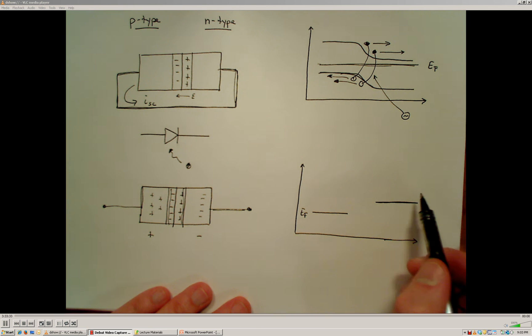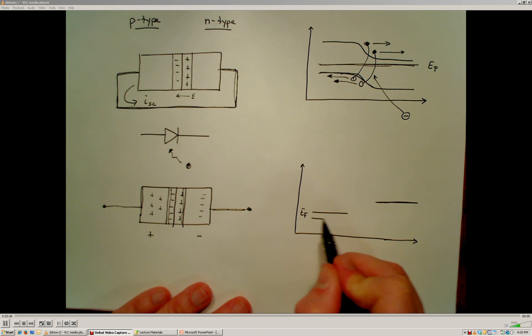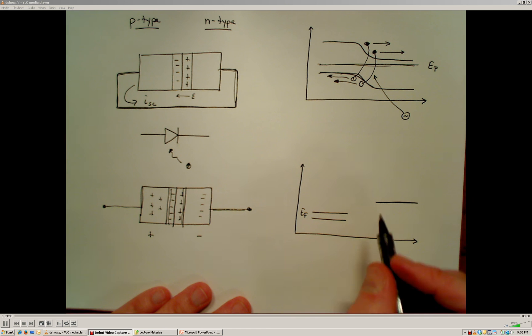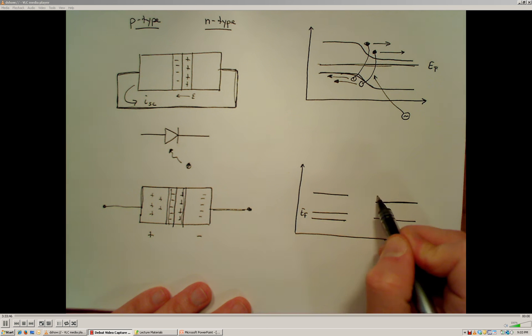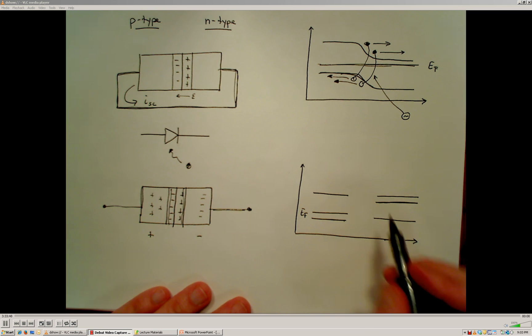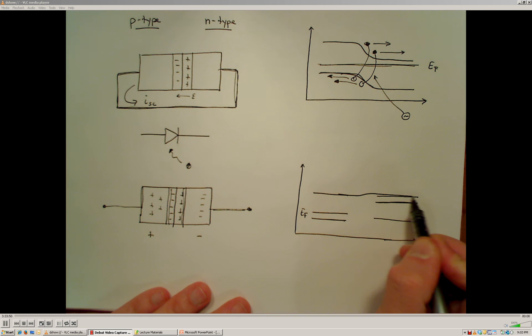And then what we're going to do is we're going to take our valence band here and our valence band here and our conduction band for the p-type and n-type, and then we're going to join them together.